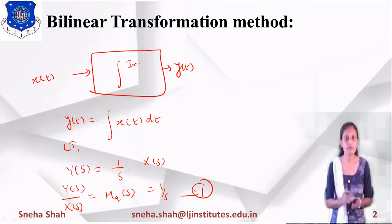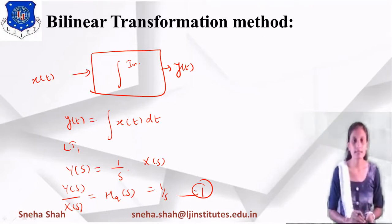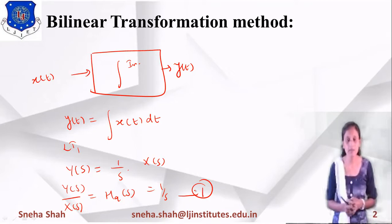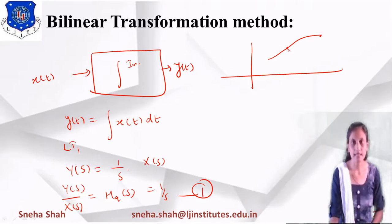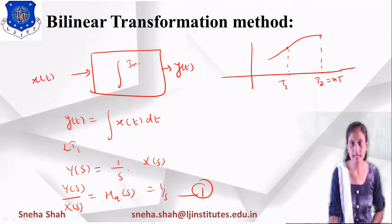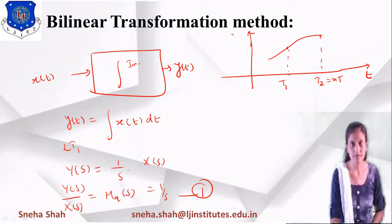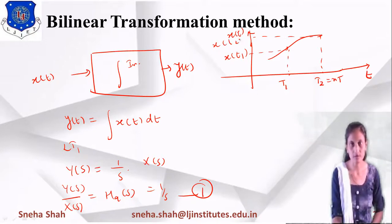We had derived this in analog form; now we need to derive its equivalent digital filter. For that we will use a graph. Suppose I take a signal and locate two points on it: time t1 and time t2, representing nTs and nTs-Ts respectively. This point is labeled x(t1) and this point is labeled x(t2).